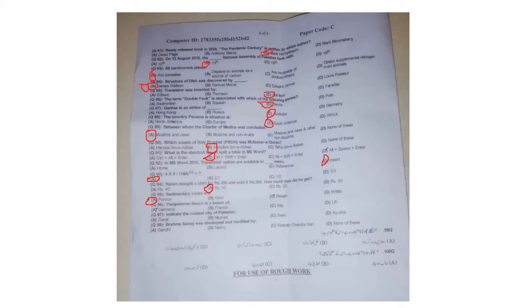Question 95: Sedimentary rocks are porous. Question 96: Pampelonne Beach is a beach of France. Question 97: The coldest city of Pakistan is Ziarat — though Murree, Swat, and Abbottabad are also associated with cold weather, making the options confusing.